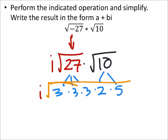And if I can find any pairs, then I can pull them out. There's a pair of 3s. So, I end up with 3 times i times the square root. I don't have any other pairs. So, 3 times 2 times 5 is 30.